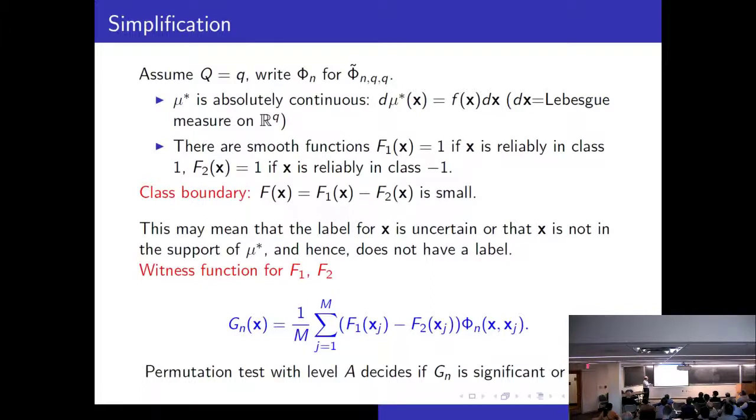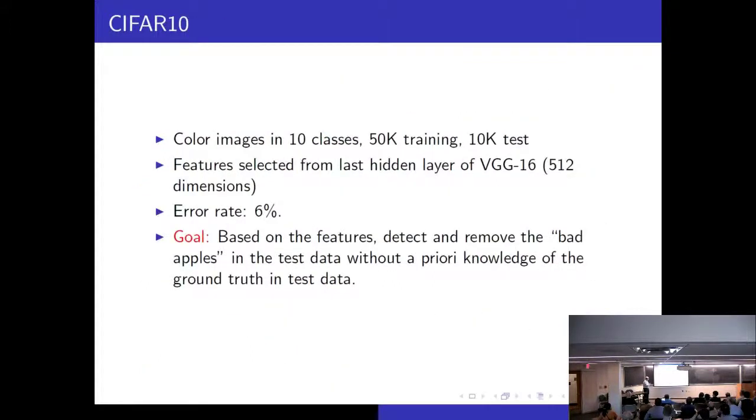So we will construct such a witness function using this Hermite kernel which I just showed you. And then we will use a statistical test called permutation test which has a certain level A for confidence. And then if this object exceeds this threshold A then we will say that now this thing is large or small reliably to classify this X properly. If it does not exceed this then it means that we don't know what's going on. X may not have a label to begin with or it could be very uncertain. So here is the data set which we looked at.